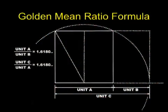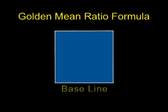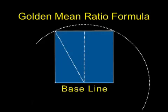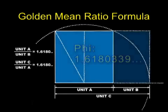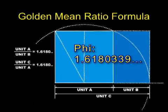The geometric formula for creating the golden mean proportion begins with a square. First, we divide the baseline of our square in half, and that midpoint becomes the center of a circular arc which bisects the top two corners of our square. Next, we extend the baseline of our square until it bisects the arc of our circle. When we measure the new length of the extended baseline and compare it with the original baseline, we get the number Phi — and we have created the golden mean rectangle and the divine proportion.